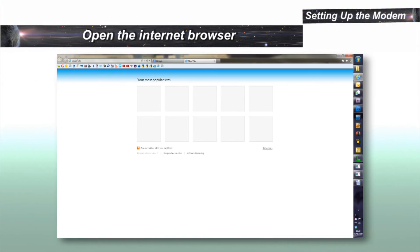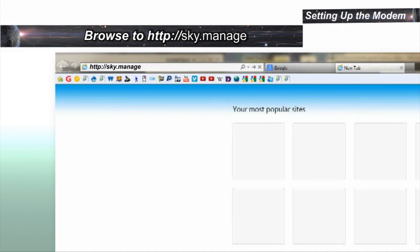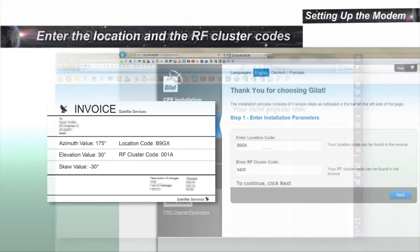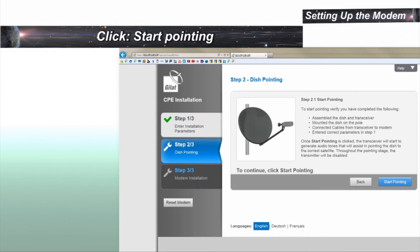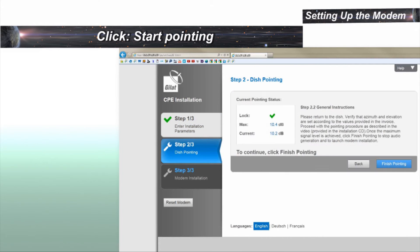To start the modem configuration, start your internet browser. Type sky.manage in the address field and press enter. Enter the location and the RF cluster codes and click next. In the dish pointing page, click start pointing.